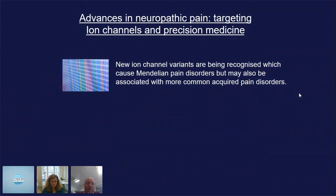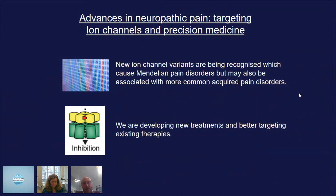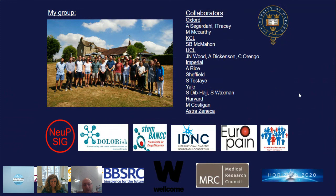To conclude: I hope I've shown that we are finding new ion channel variants — initially in very rare Mendelian pain disorders, but increasingly important in more common acquired neuropathic pain disorders. This is relevant to treatments: we're developing new treatments targeting specific sodium channels, exploring novel approaches like chemogenetics, and there are things we can do right now to better target existing therapies through stratified or personalized approaches. Thank you to my lab, my many collaborators, and my funders.